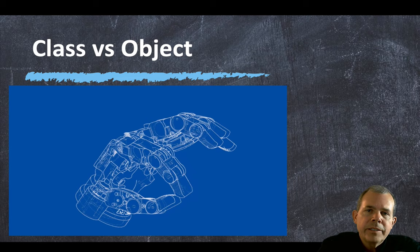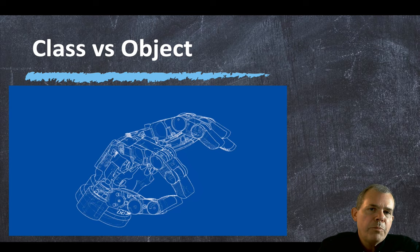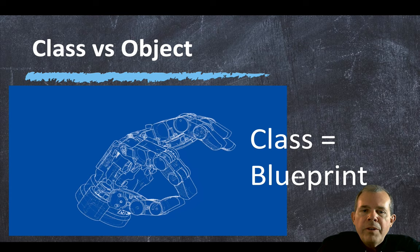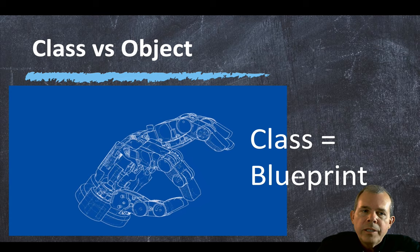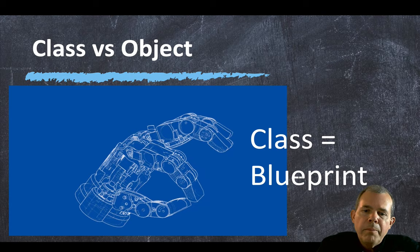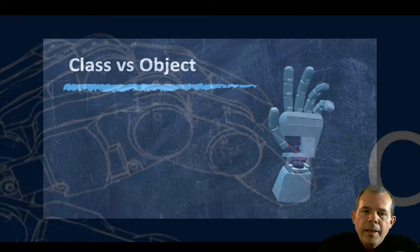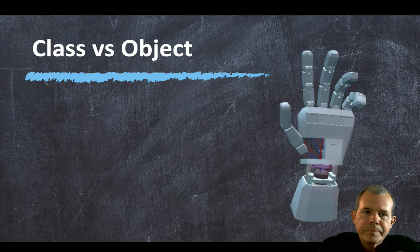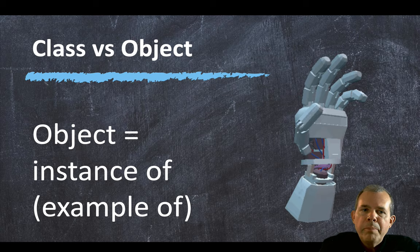I've been using the words class and object and switching between them. What's the difference? Are they the same thing? Not really, but they are very related. Let's say we're going to create a game that has a robot with a hand, and we create a class — let's call it Hand. The class itself is the blueprint: the computer code that defines what every hand in your game would look like. But when we want to create an actual hand on a robot — maybe his left hand — that becomes the instance of the class. So the class is the blueprint; the object is the instance of the class.